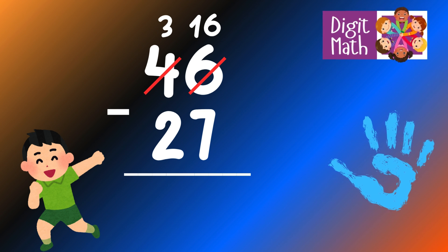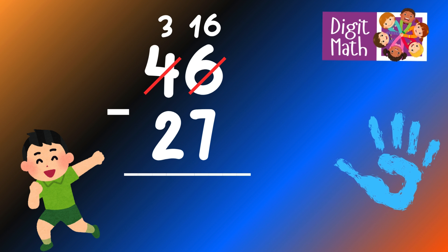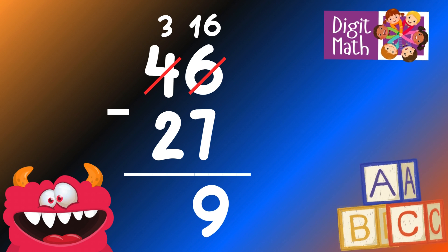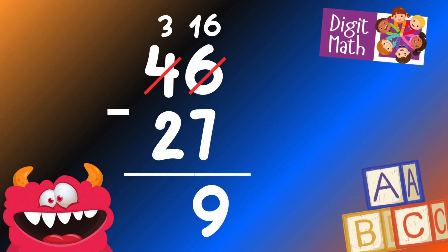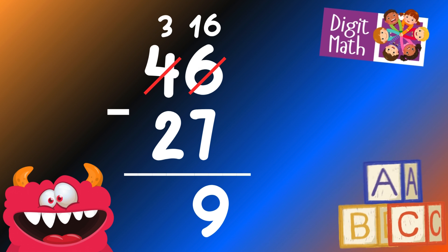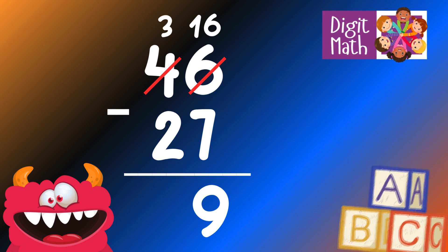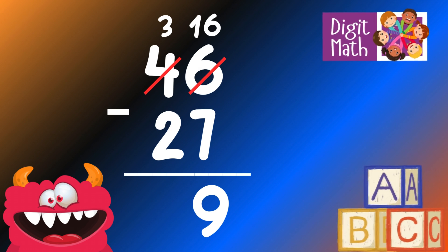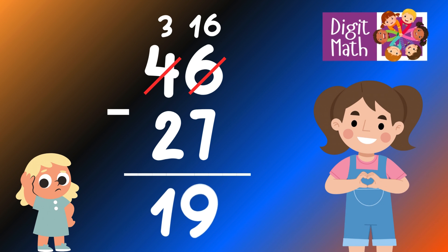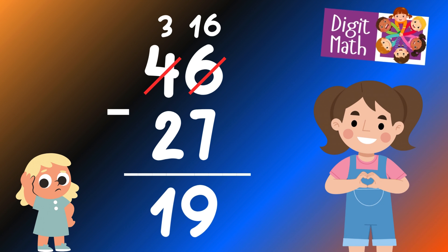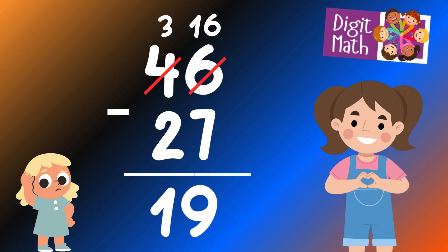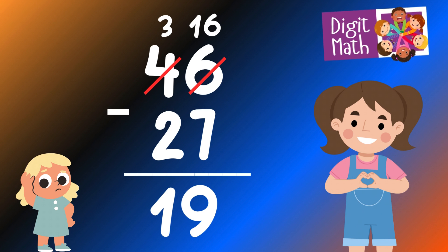Now we have 16 in the Units column. Subtract 7 from 16, which equals 9. In the Tens column, we now have 3. Subtract 2 from 3, which equals 1. So the final result is 46 minus 27 equals 19.